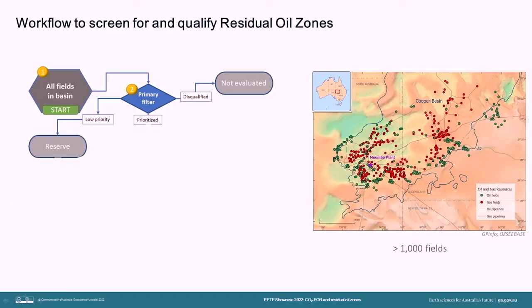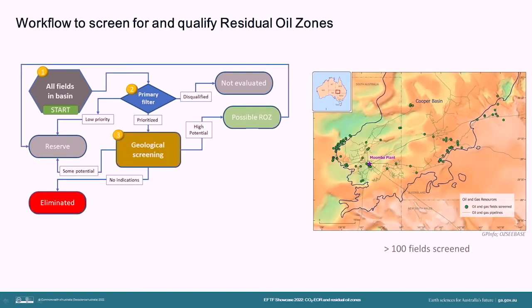This included disqualifying fields that, for example, contain only gas, or are too shallow, or are too tight. The remaining fields were then prioritised based on factors such as their oil in place, their production history, and any reported residual oil zones. The next step was to complete a geological screening to identify fields with high residual oil zone potential, based on the nature of the oil pay zones, shows in the field, and other factors. We ended up with around 100 candidate fields that were put forward to the next stage, which is petrophysical analysis.